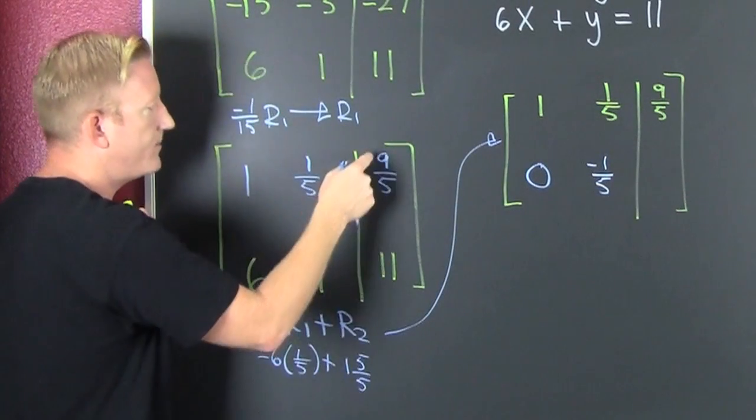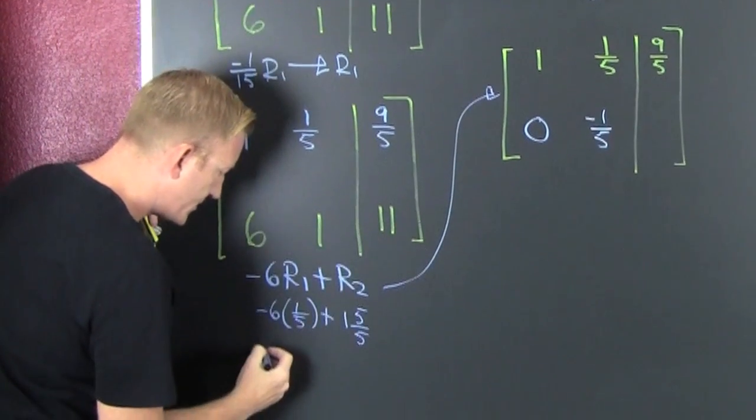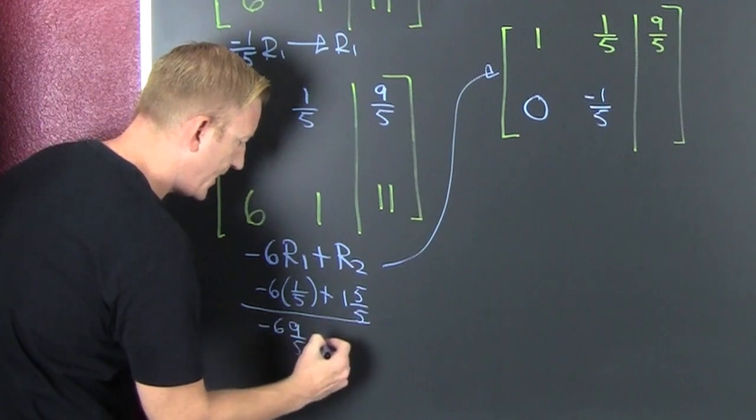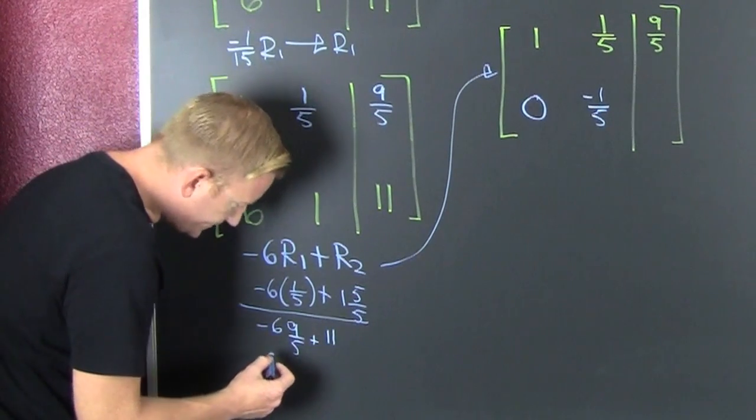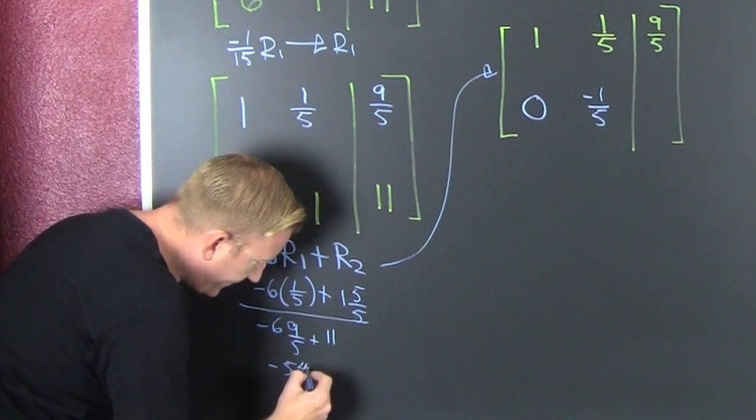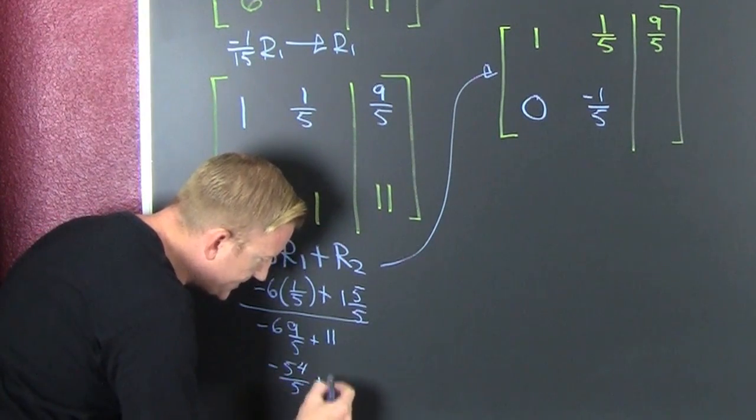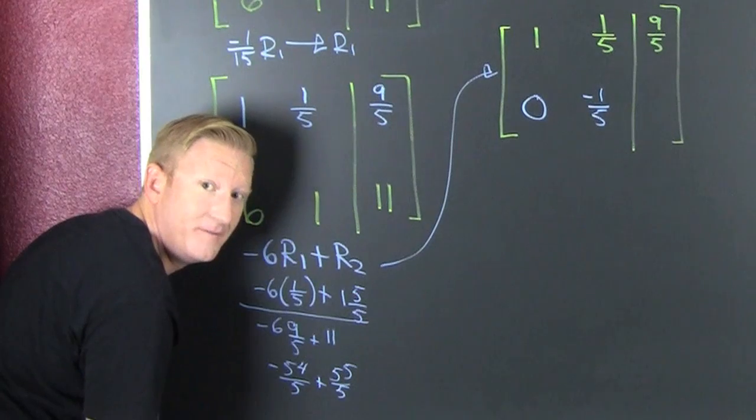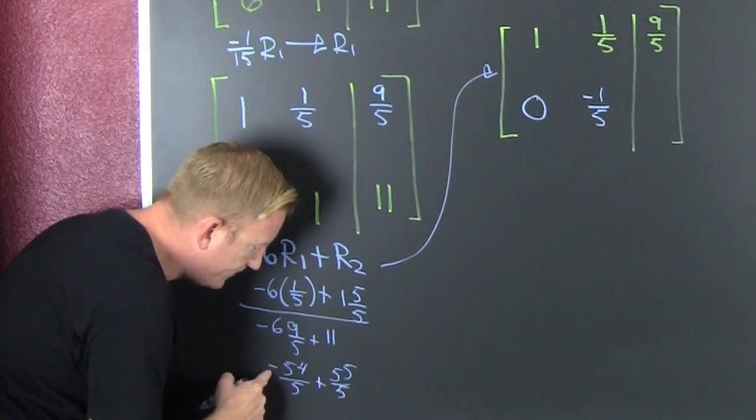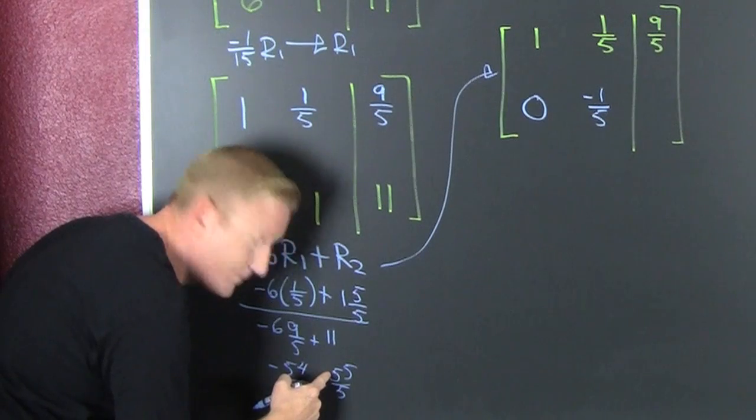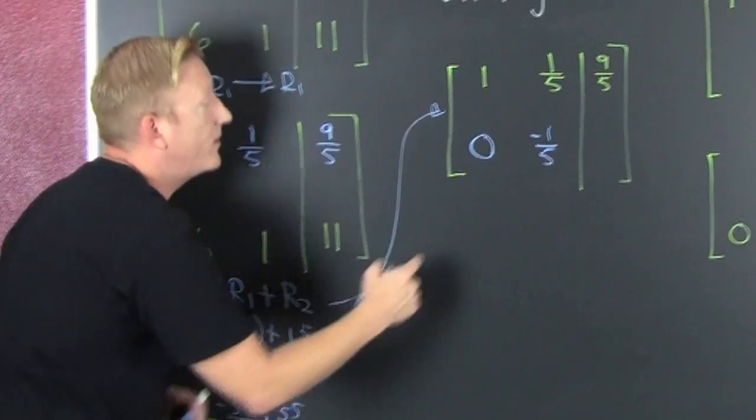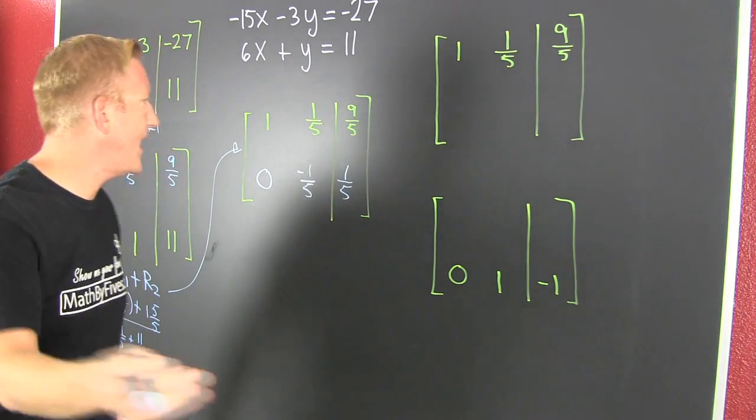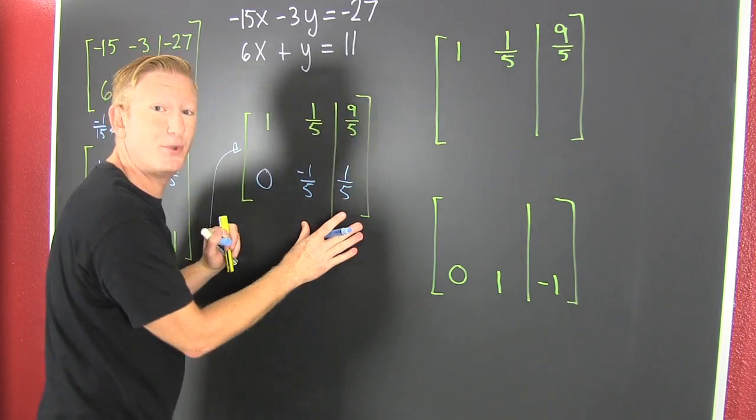Then we're doing minus 6 times row 1 plus row 2. So that's minus 6 times 9/5 plus 11. So then that's minus 54/5 plus 55/5. When I get that common denominator, man, we are low. Anyway, and minus 54 plus 55 is 1. So then I have 1/5 right here. Fraction action. Get yourself a nice calculator that does pretty primitive fraction action.